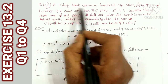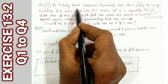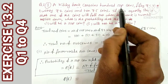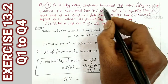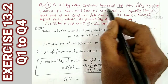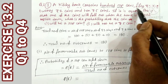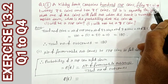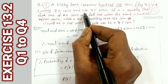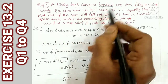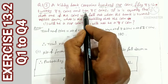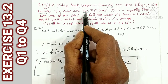Here is a kiddie bank. It contains 100 coins of 50 paise, 50 coins of 1 rupee, 20 coins of 2 rupees, and 10 coins of 5 rupees. Total: 100 plus 50 is 150, plus 20 is 170, plus 10 is 180 coins. That is the total number of outcomes.